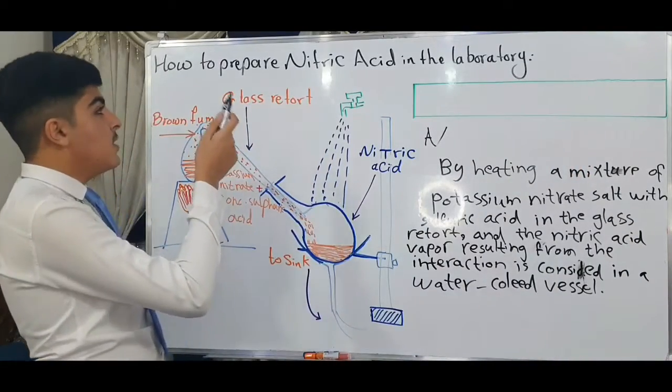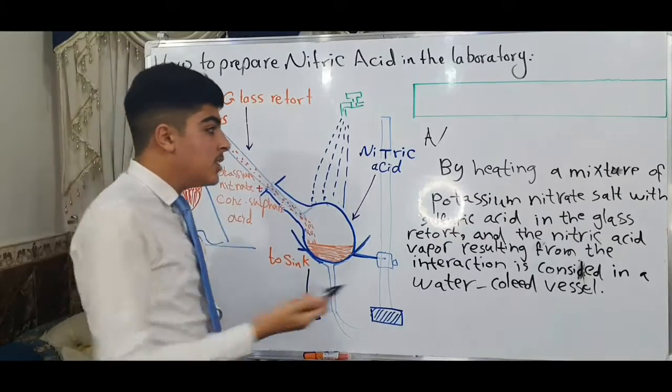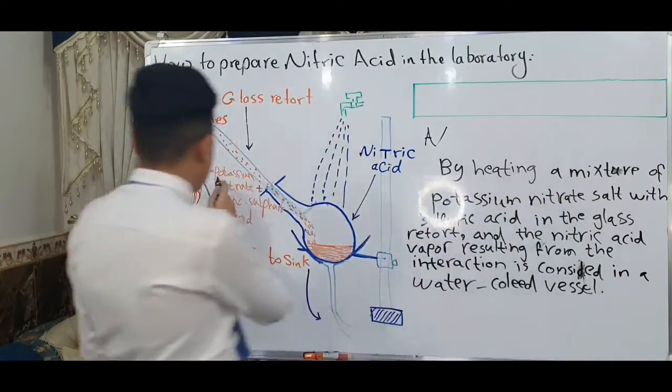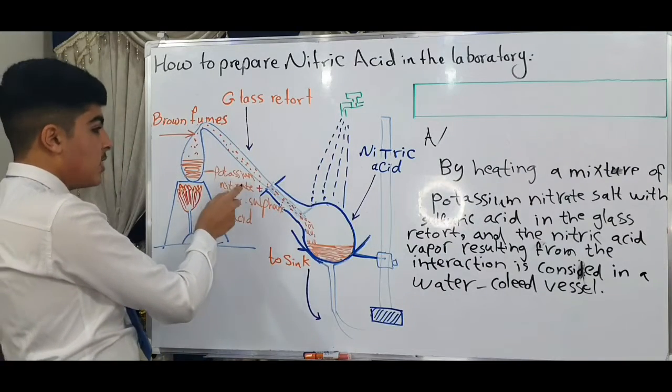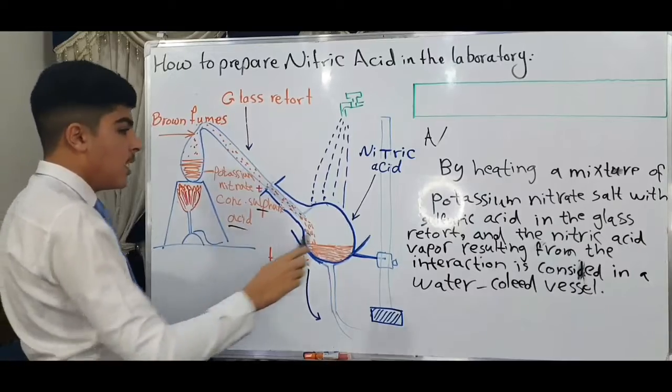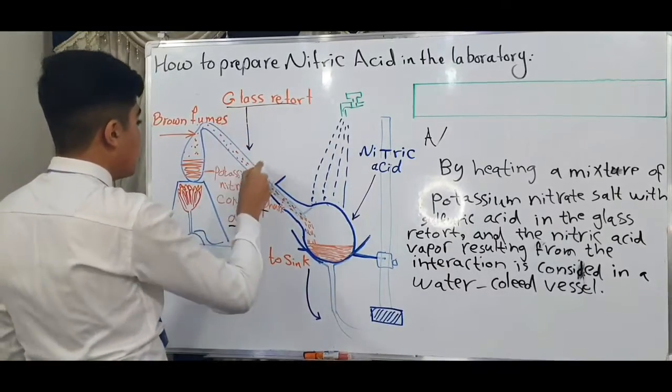The preparation of nitric acid in the laboratory is by heating a mixture of potassium nitrate salt with sulfuric acid in the glass retort.